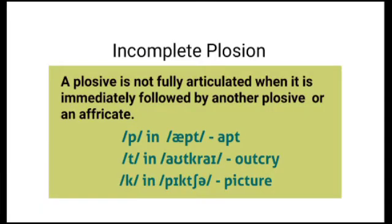The first one is incomplete plosives. A plosive is not fully articulated when it is immediately followed by another plosive or an affricate. This is the context of incomplete plosives — the plosive is not fully articulated. The first plosive is not fully articulated when it is immediately followed by another plosive or an affricate, just like an explosion sound.